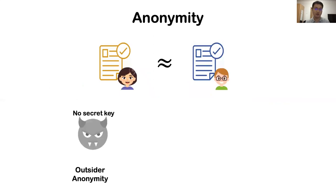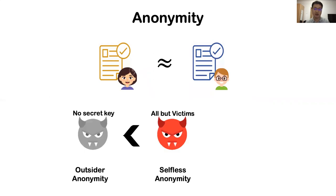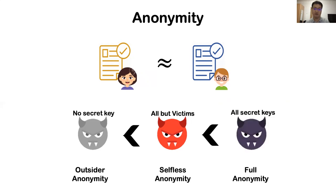Outsider anonymity considers an adversary that does not have any secret key of the group members. A stronger form is sometimes called selfless anonymity, which enables the adversary to have all secret keys except the victim's. And finally, full anonymity considers the strongest adversary that could have all secret keys, including Alice's and Bob's.